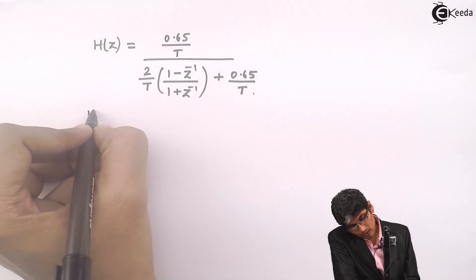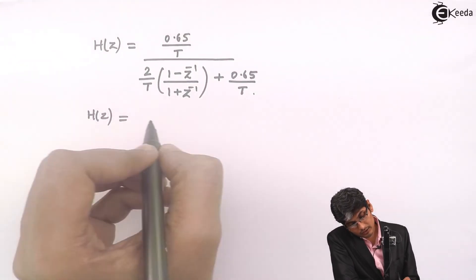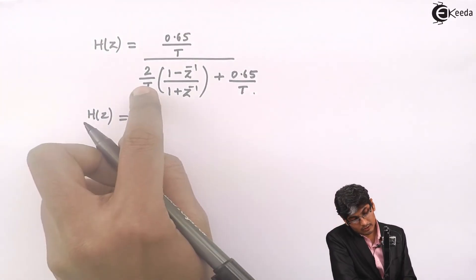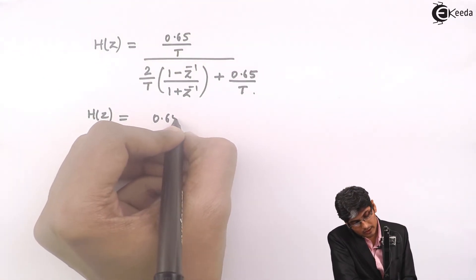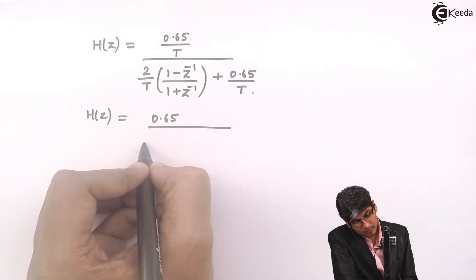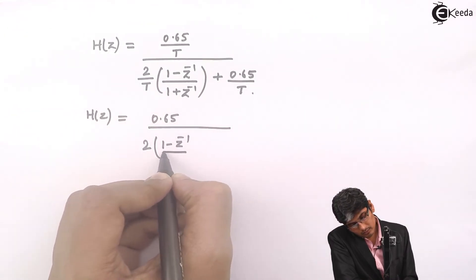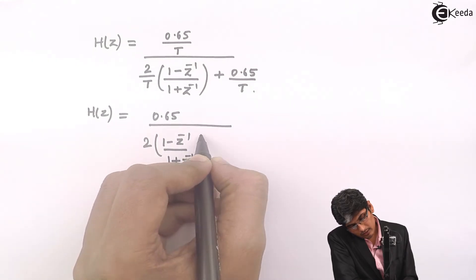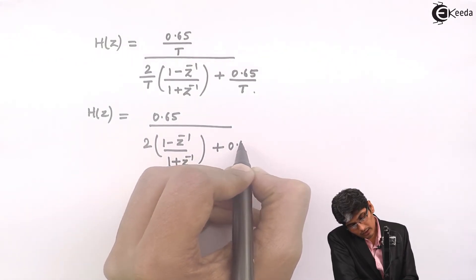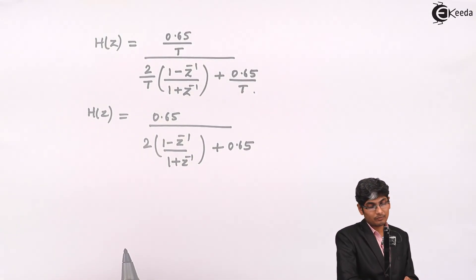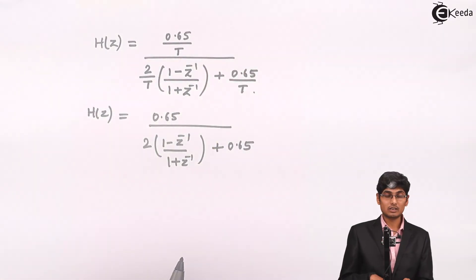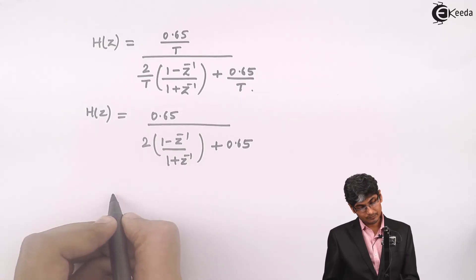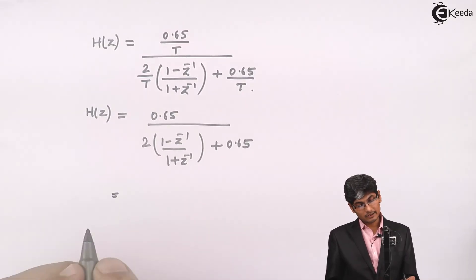To solve further, you get H(z) equals—let us make this T common and cancel with the T above. You get 0.65 divided by [2(1 - z⁻¹)/(1 + z⁻¹) + 0.65], because we have taken this T as a common denominator and divided with the T above. Now let us make the adjustment.